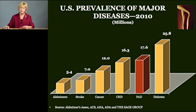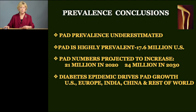Our conclusions on prevalence: PAD prevalence is underestimated. PAD is highly prevalent at 17.6 million. PAD numbers are projected to increase to 21 million in 2020 and close to 24 million in 2030. The diabetes epidemic is driving PAD growth — not just in the U.S., but in Europe, India, China, and the rest of the world. That concludes my talk.